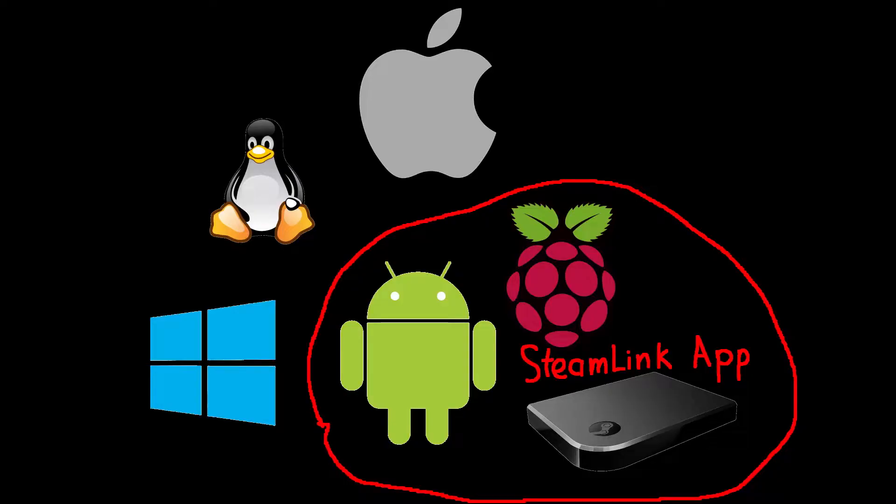But the main drawback of NVIDIA Game Stream is the requirement of an NVIDIA graphics card at the host. Steam Remote Play supports only 60 fps at 4K resolution. Steam Remote Play is supported on all platforms that can run the Steam client. With the application called Steam Link, you can cast games to Android, iOS, and Raspberry Pi. Steam Remote Play doesn't require an NVIDIA graphics card.